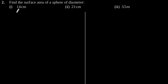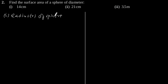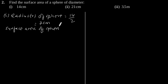Exercise 13.4, question number 2: find the surface area of a sphere of diameter 14 cm. As given in the question, diameter is 14 cm, so radius r of a sphere will be 14 divided by 2, which is equal to 7 cm. Now, using the formula of surface area of a sphere, which is 4πr², and putting the value of r, that is 7 cm, we will get: